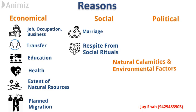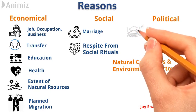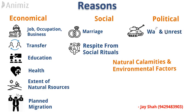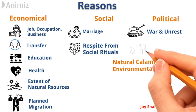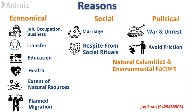Third is political reason. First, war and unrest: in some areas where war takes place continuously, people have to live in fear and insecurity, so they leave the situation of unrest and move to a safe and secure place — and migration takes place in this manner. Second, avoid friction: whenever riots take place within any state, people will not prefer to stay at those places and will migrate to some peaceful place. Social and political reasons each have two sub-points, so they can be separately asked as a two or three mark question.